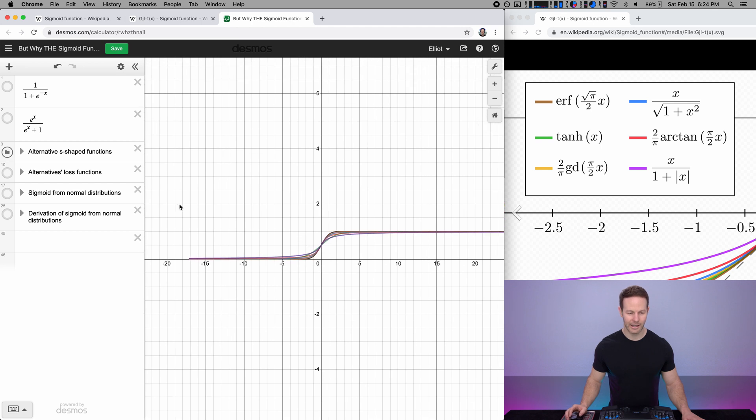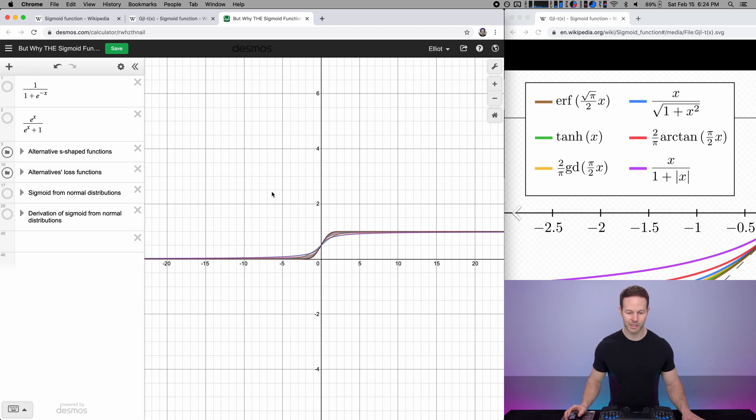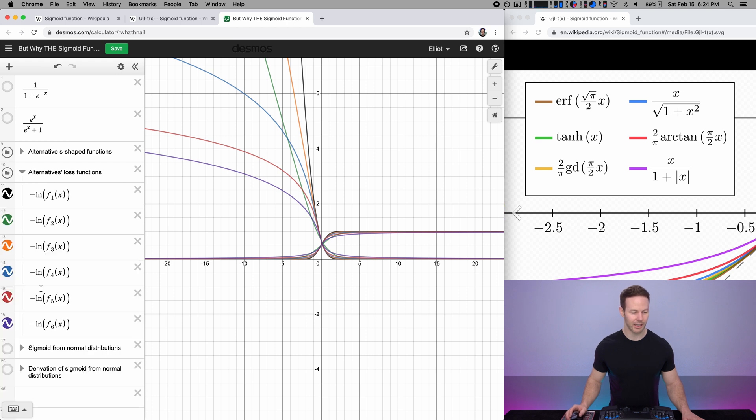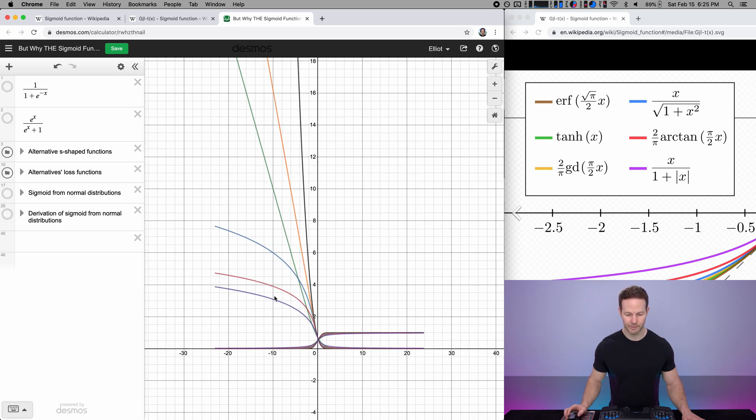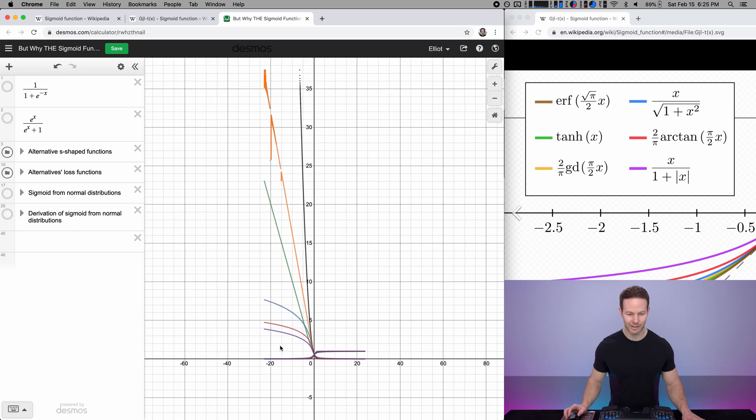But if we zoom out, and we look at the loss function for these different input functions, and for the loss, we're just using the standard categorical loss of the negative log of the probability. So we'll notice a couple different things. First of all, we'll notice that these lines are getting cut off, and that this orange one's looking a bit weird. This black one is starting to get dotted.